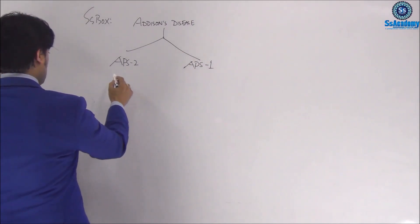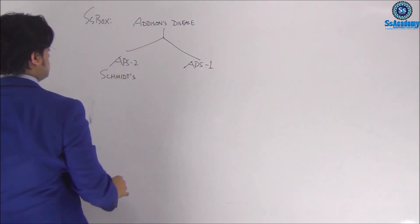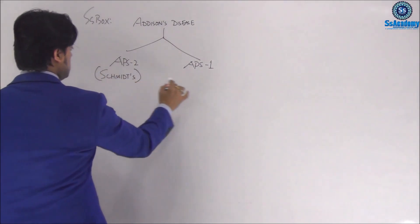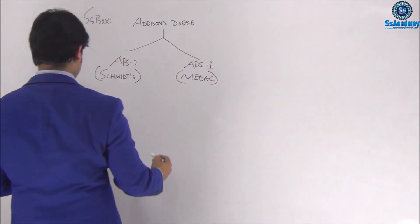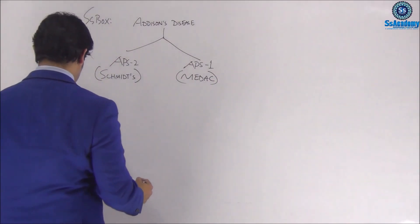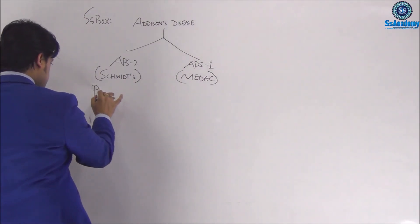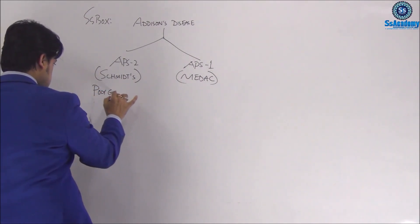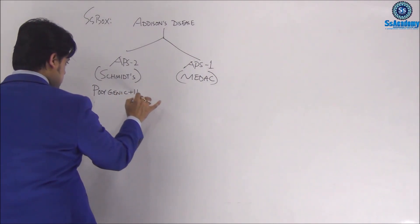Schmidt syndrome, or whatever you can remember, but type 1 is MEDAC—we need to remember MEDAC. Type 2 is polygenic, meaning multiple genes are responsible, and it is associated with HLA-DR3 or DR4.